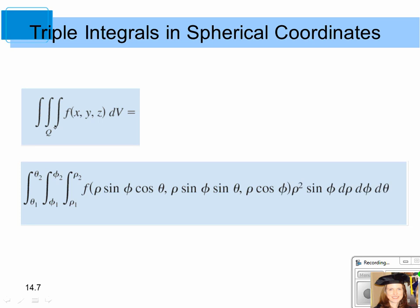For a triple integral — you see that triple integral symbol with the Q underneath — the bounds determine the solid region in space. The triple integral of some function f(x, y, z) dV, when converted to spherical coordinates, replaces x with rho sine phi cosine theta, y with rho sine phi sine theta, and z with rho cosine phi. The differential volume is rho squared sine phi d rho d phi d theta. The bounds for rho go from rho₁ to rho₂, phi from phi₁ to phi₂, and theta from theta₁ to theta₂.